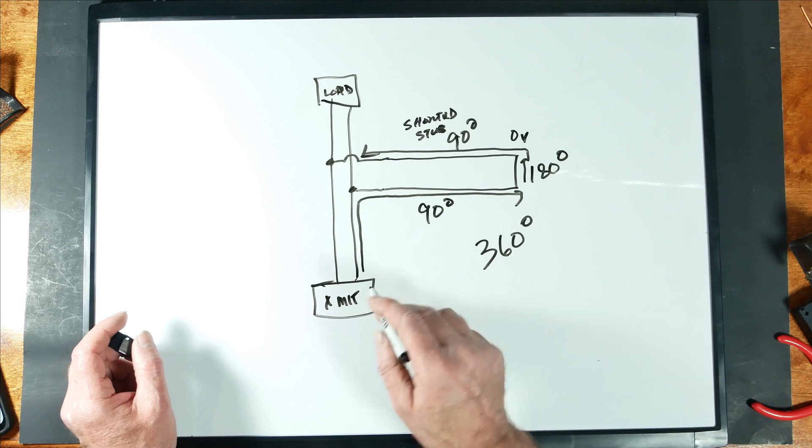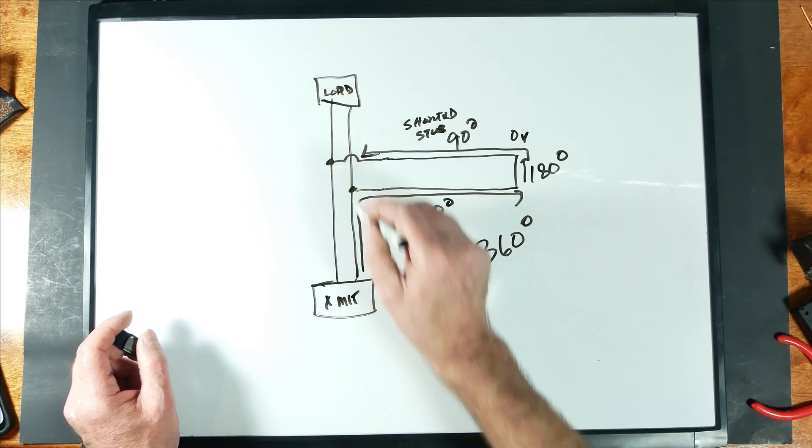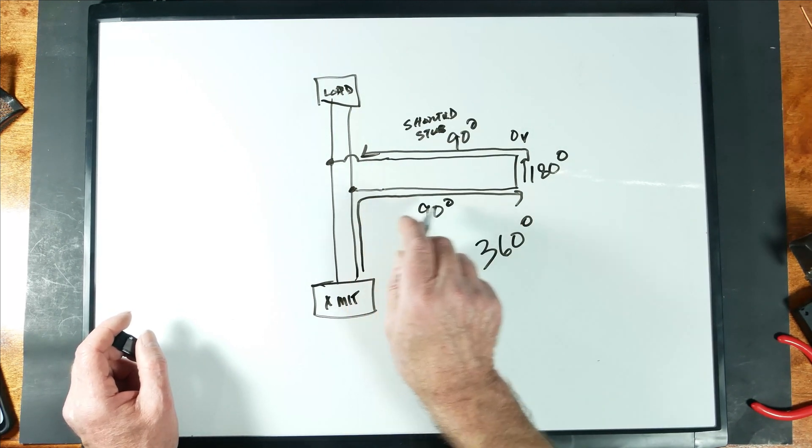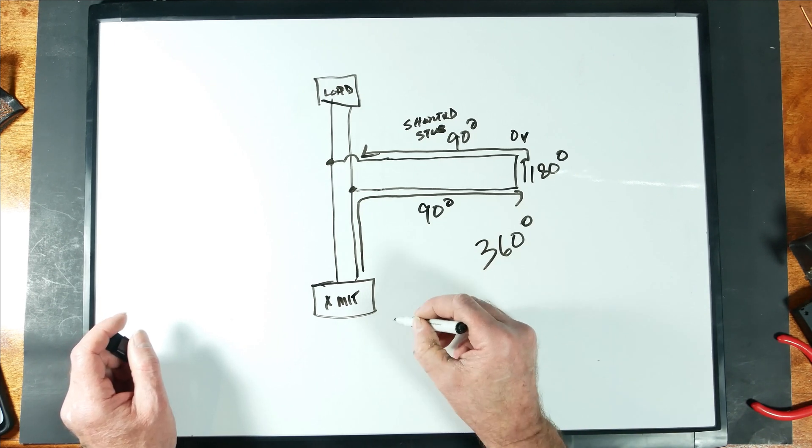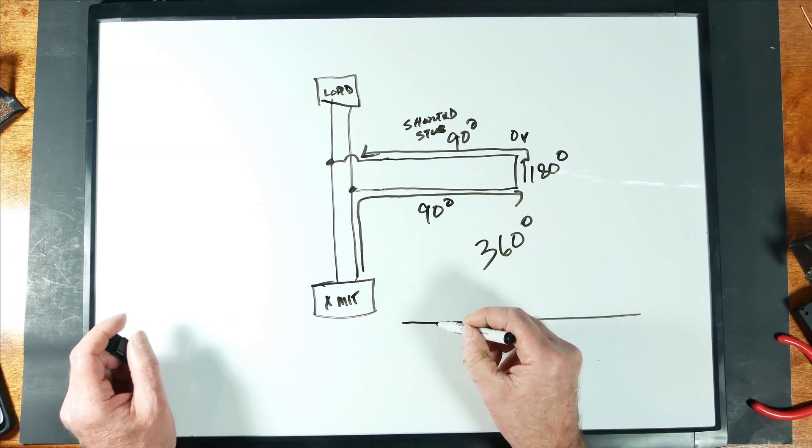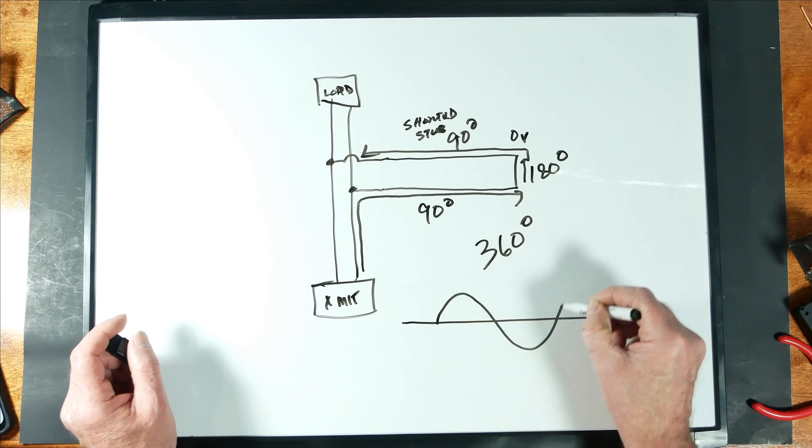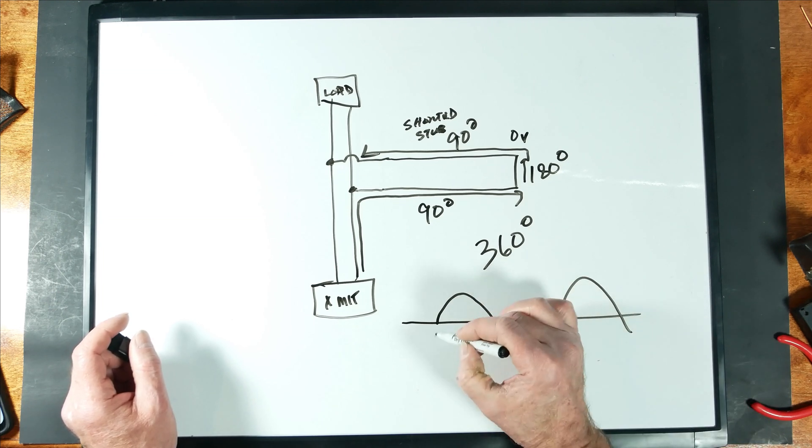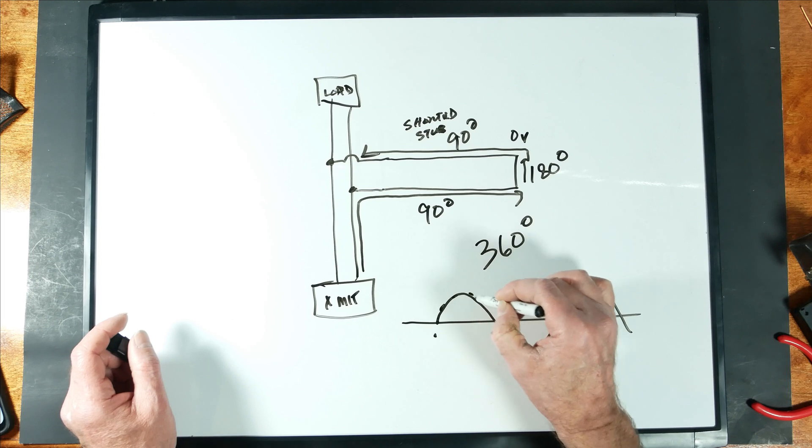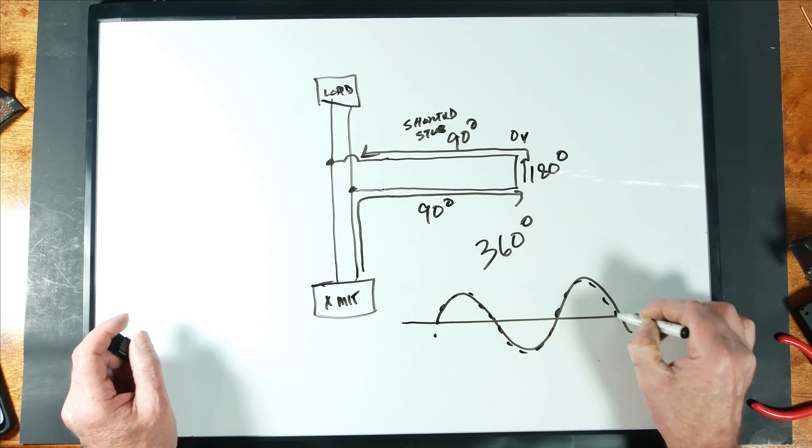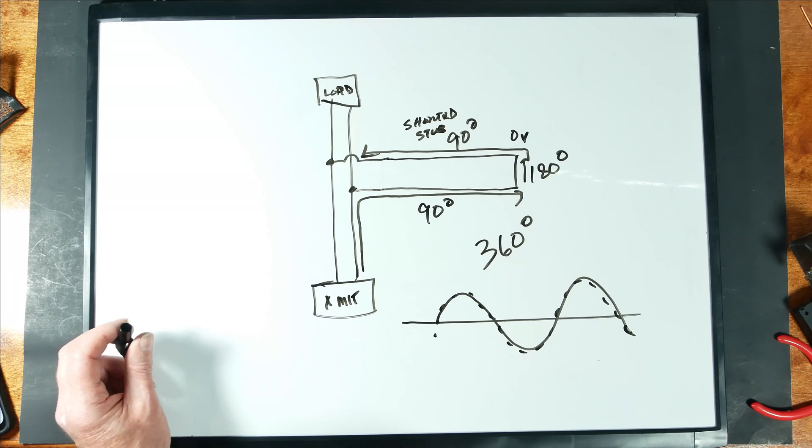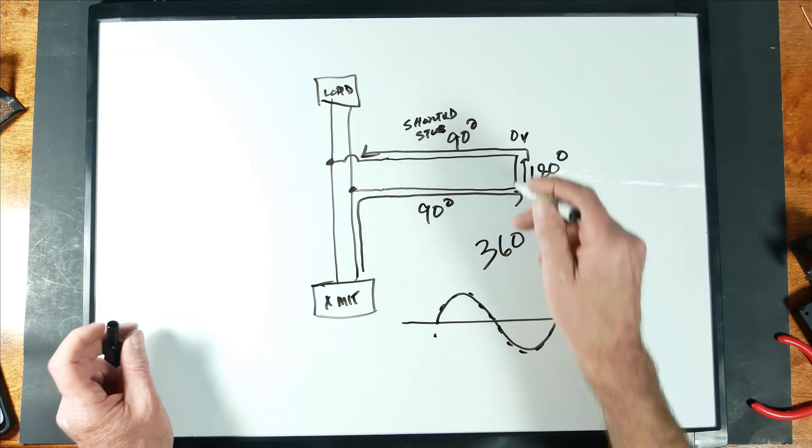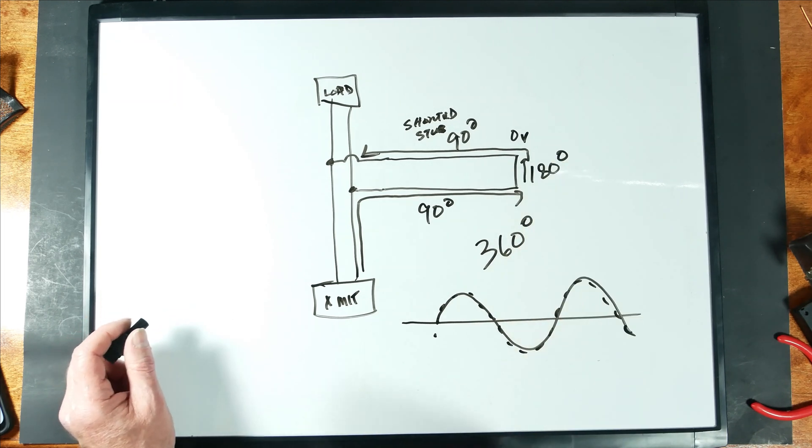So these waveforms, the waveform going to the load, and the waveform going into the shorted stub, will overlap and look like this. And then our stub waveform essentially follows it. So nothing happens. As long as you're transmitting on the frequency that this stub is tuned to, there's no change in the output.